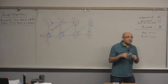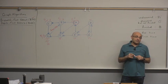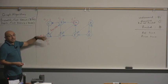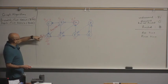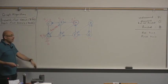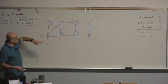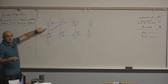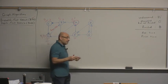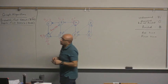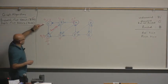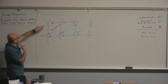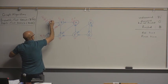Whether an edge is a back edge or a forward edge is a function of the search order. Now I go back to C. I have already looked at all the neighbors of C, so it's time to finish it. C is now black with finish time 6.